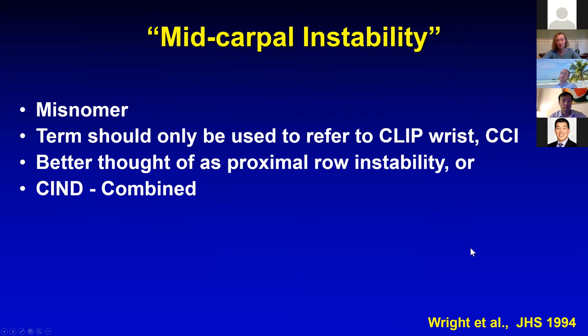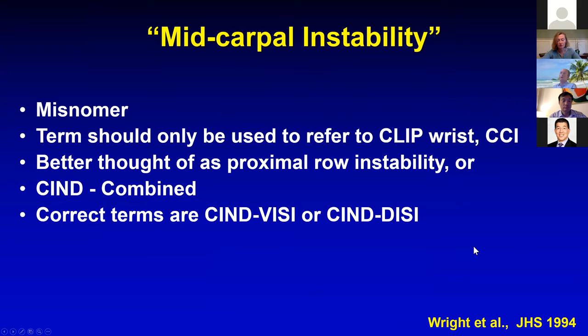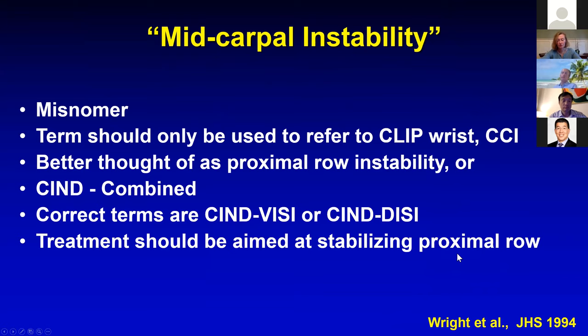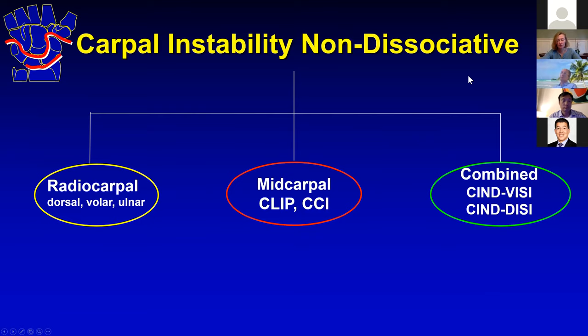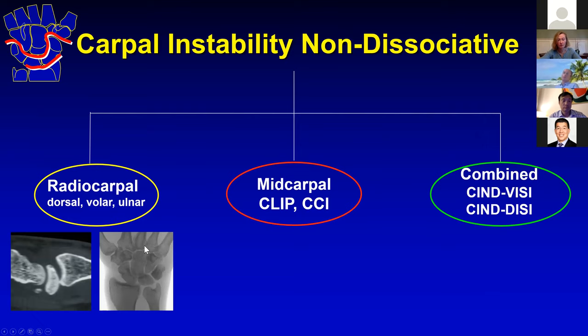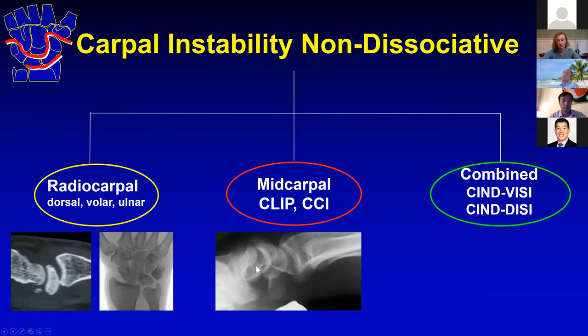What we think of as mid-carpal instability is better thought of as proximal row instability or CIND-combined — carpal instability non-dissociative combined — because it's a combined injury to the mid-carpal and radiocarpal joints. The correct terms are CIND-VISI and CIND-DISI, and treatment should be aimed not at crossing the mid-carpal joint but at stabilizing the proximal row. CIND can be thought of in three types: radiocarpal, where the entire carpus is subluxed palmarly or ulnarly; midcarpal, which should be confined to CLIP wrist and capitolunate combined instability; and the larger combined carpal instability CIND-VISI and CIND-DISI.